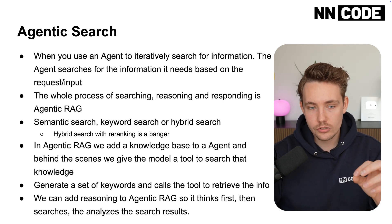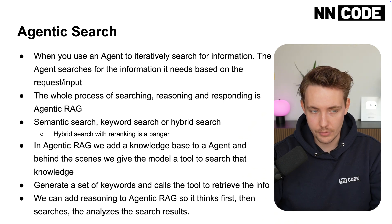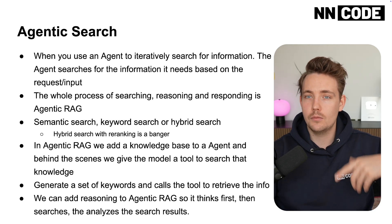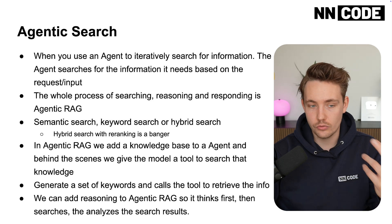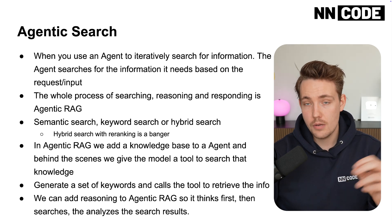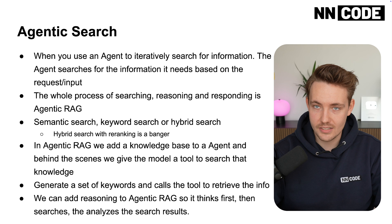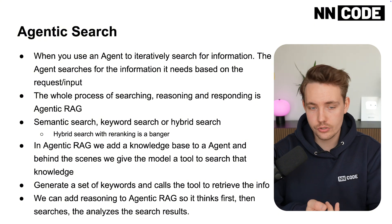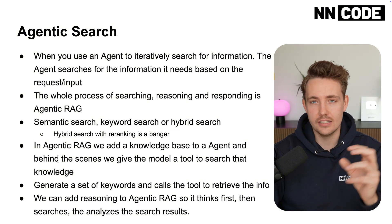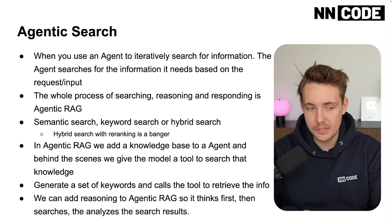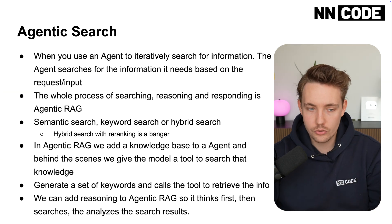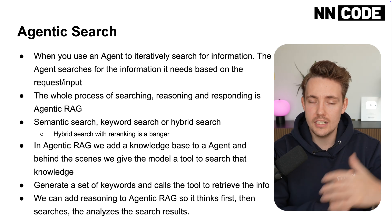Agentic search is when you use an agent to iteratively search for information across different databases and find the most relevant results based on the input query. The whole process of searching, reasoning, and responding is the agentic RAG pipeline. The reasoning part is what makes it agentic compared to traditional RAG — in traditional RAG you just have your input, search for it, and get a response without the reasoning step. That reasoning step makes it more agentic and way more reliable.